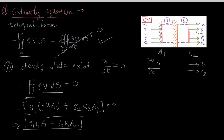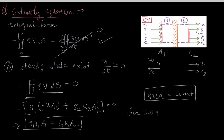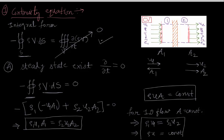We can also write this equation as ρuA = constant. For one-dimensional flow, the area is constant, which implies A₁ = A₂, and our continuity equation simplifies to ρu = constant.